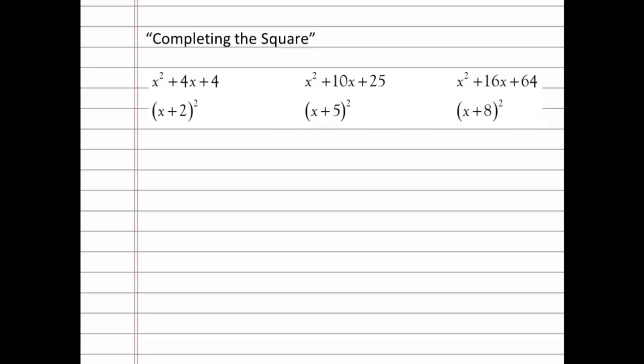So here are three examples of perfect trinomials and what they factor into. In this case, we also have three other perfect trinomials, except for the fact that the b value, the value of the coefficient of the middle term, the linear term, is a negative amount. And then you can see right here what those factor into.